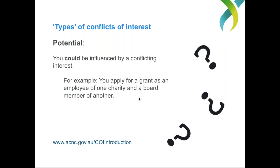As mentioned at the beginning, we've broken conflicts of interest into three broad categories. The first is an actual conflict of interest. Sarah, can you give us an overview? So an actual conflict of interest is when you are being influenced by a conflicting interest — you are actually being influenced. An example is your charity considering whether to give a grant to a kindergarten that your child attends.